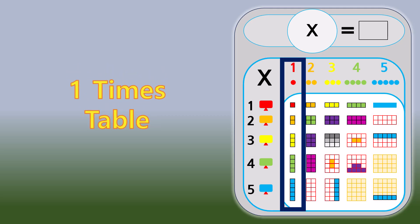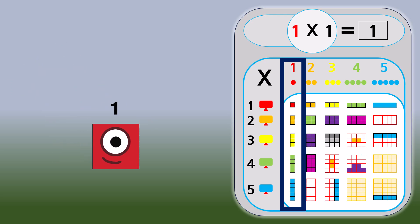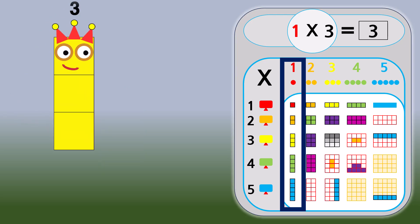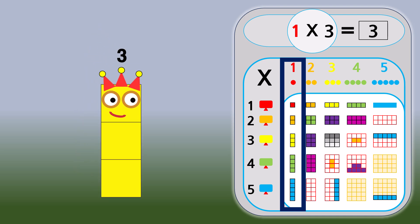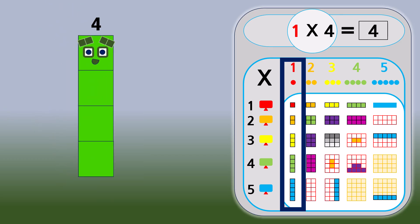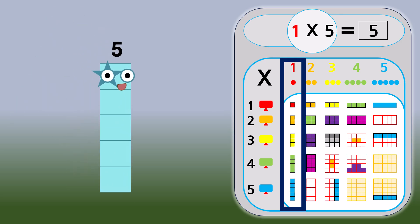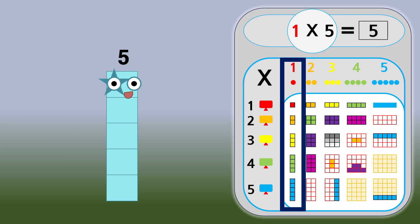1 times table. 1 times 1 equals 1. 1 times 2 equals 2. 1 times 3 equals 3. 1 times 4 equals 4. 1 times 5 equals 5.